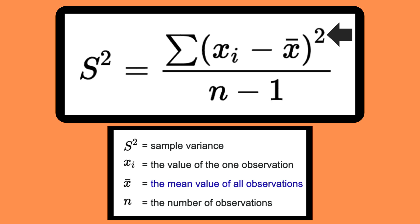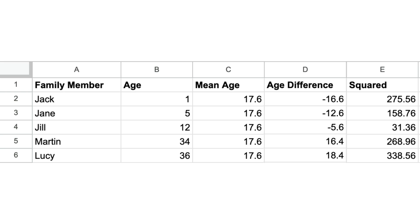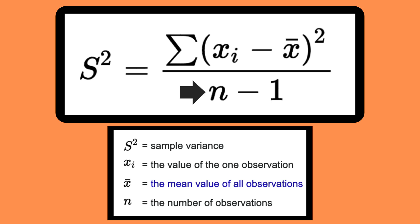We'll then square the result for each member and add them all together. Finally we'll divide the result by the amount of family members minus 1, which in this case means 5 family members minus 1 equals 4.